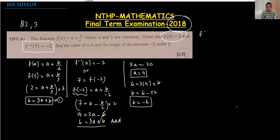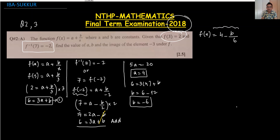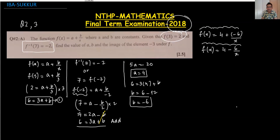So our final function is f(x) = 4 - 6/x. With a = 4 and b = -6, the minus sign is preserved, giving f(x) = 4 - 6/x. This is the final equation.